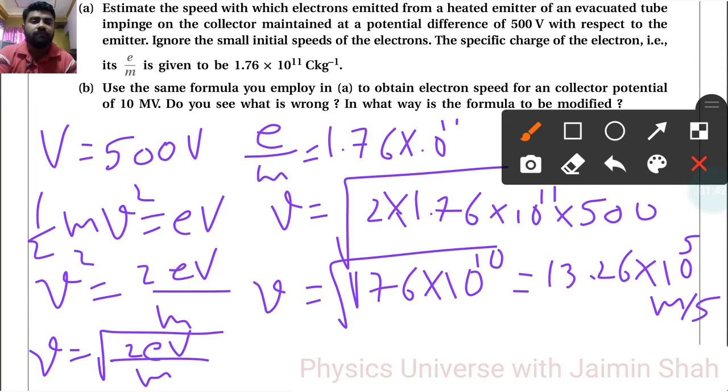Now, use the same formula you employ in part A to obtain electron speed for a collector potential of 10 megavolt. For that you have to just change this one to 10 into 10 raised to 6.